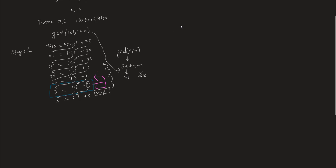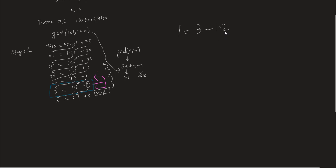Starting the backtracking: from the step 3 = 1×2 + 1, we can write 1 = 3 - 1×2. This still doesn't give us the Bézout coefficients with 101 and 4620, so we continue working backwards. We substitute 2 using the equation 23 = 7×3 + 2, i.e., 2 = 23 - 7×3, giving us 1 = 3 - 1×(23 - 7×3).